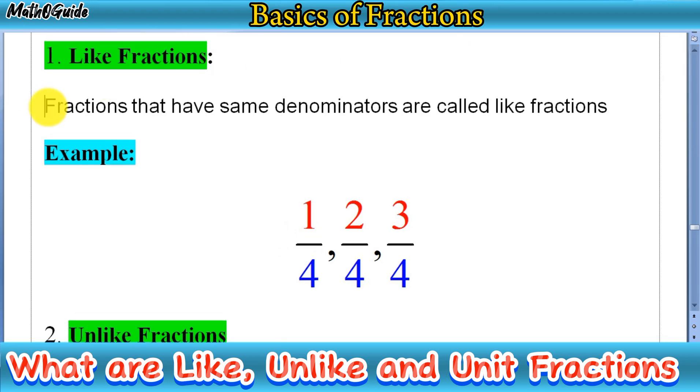Fractions that have same denominators are called like fractions. Simply, if you want to find like fractions, we have given a set of fractions. As you can see, we have 1 over 4, 2 over 4, and 3 over 4. These 1 over 4, 2 over 4, and 3 over 4 are examples of like fractions.